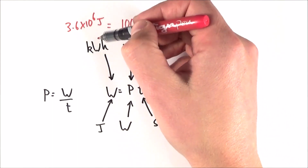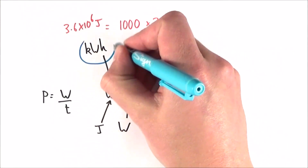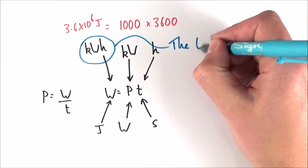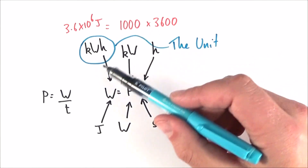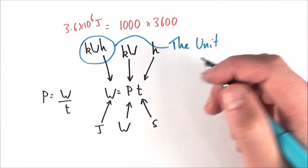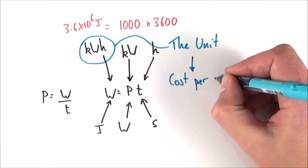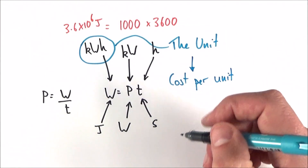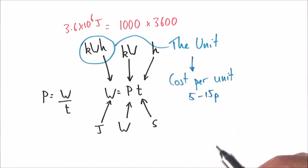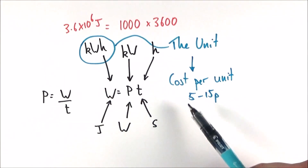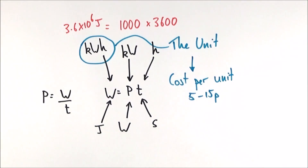The kilowatt hour is a unit of energy, and it's sometimes just called the 'unit'. If you look at a household electricity bill, it doesn't always show kilowatt hours — it just gives you how many units you've used that month, and then the cost per unit. The cost per unit typically depends on when and how you generate electricity, but it's in the order of five to fifteen pence. So every kilowatt hour costs around ten pence per unit. If you know the total kilowatt hours used and the cost per unit, you can work out the total cost.